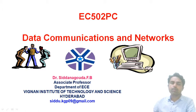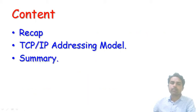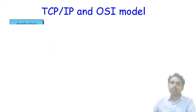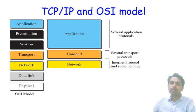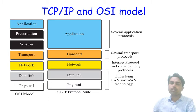Good morning and welcome to the course on Data Communication and Networks. Today we shall discuss a recap of the previous class discussions and the TCP/IP addressing model, followed by a summary. In the last class, we discussed the TCP/IP and OSI model. The OSI model has seven layers: physical, data link, network, transport, session, presentation, and application. The TCP/IP model has five layers: physical, data link, network, transport, and application.